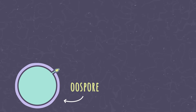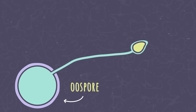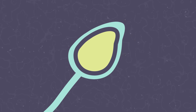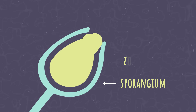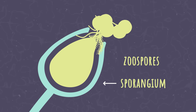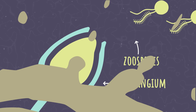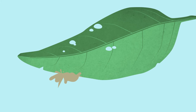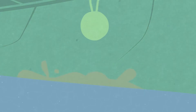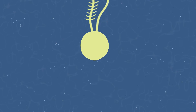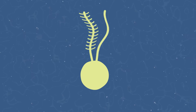As the pathogen grows, it produces reproductive structures such as sporangia — small balloons filled with swimming cells called zoospores. The sporangia and zoospores move through flowing water, irrigation water, and splashing rain. Propelled by their twin flagella, zoospores can actively swim toward nearby plant hosts.